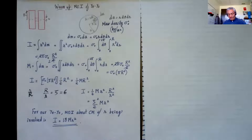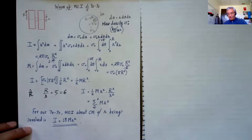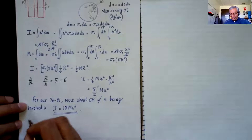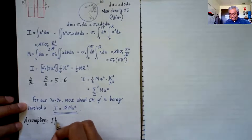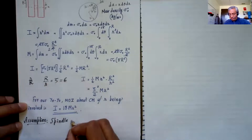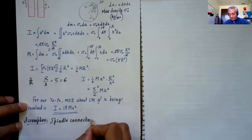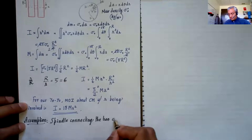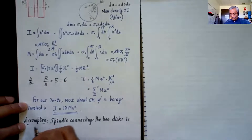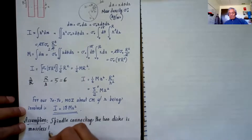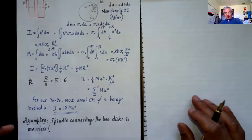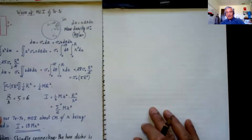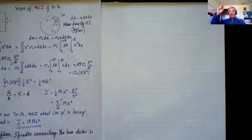That finishes our warm-up. We've successfully found the moment of inertia of our yo-yo, where m is the mass of the yo-yo. The assumption made in deriving this formula is that the spindle connecting the two disks is massless. Now, the simplest play of a yo-yo is to just let it go down and make it come back up.